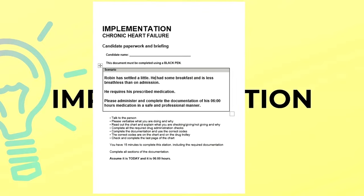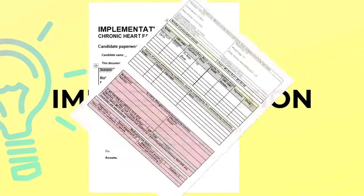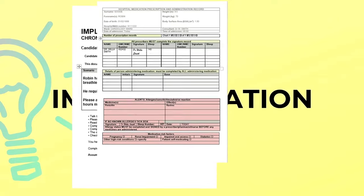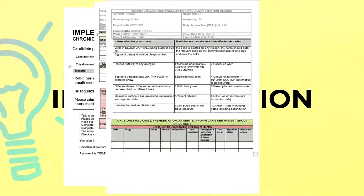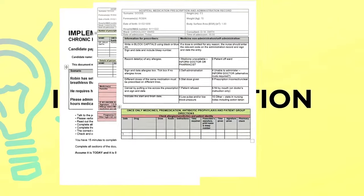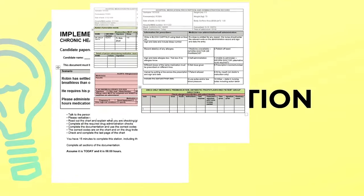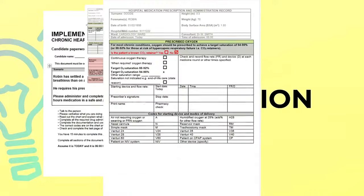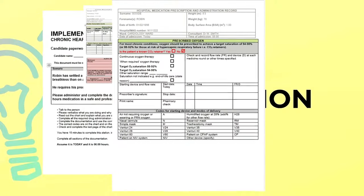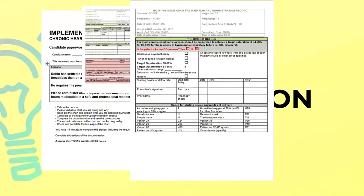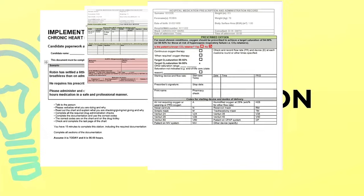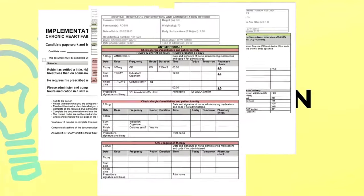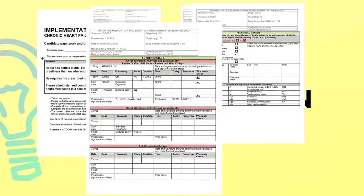I am going to read the prescription first. By the way, we have different kinds of prescription charts in the implementation station, depending on the setting and scenario. Please learn all of them. This is an example of a prescription chart in the implementation station in a hospital setting. This is the most common one.